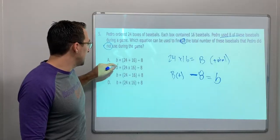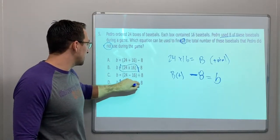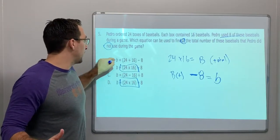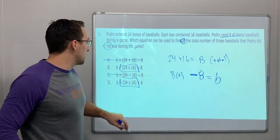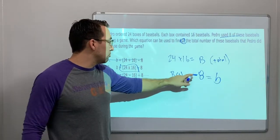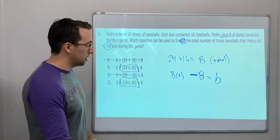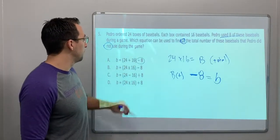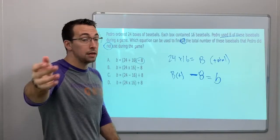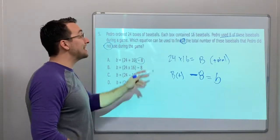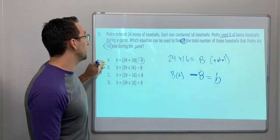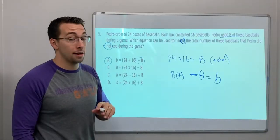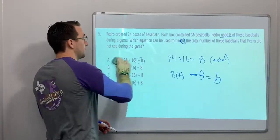24 times 16. Check this out. Perfect. So A is wrong. C is wrong. And then are we subtracting 8 or adding 8? We're subtracting 8. Here we are. Bingo. That's what we need. He used 8. So how many did he not use? Well, he did not use a lot of baseballs.